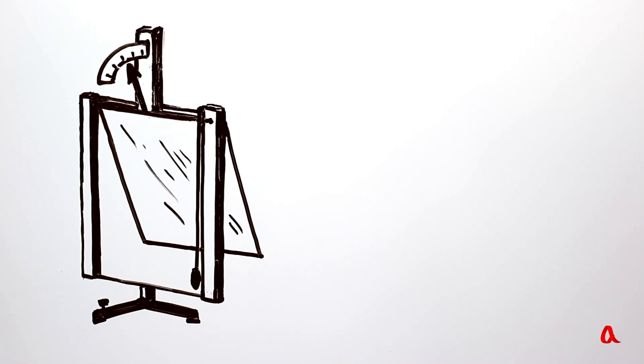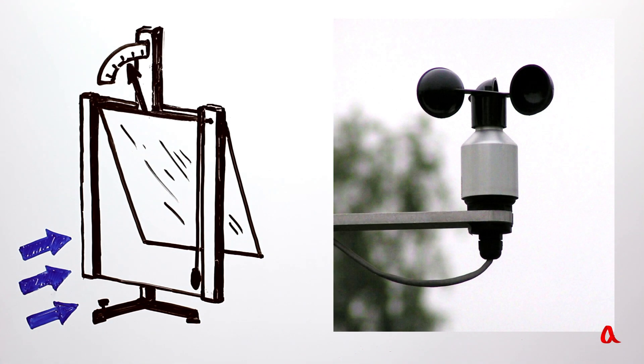The simplest device that can measure the speed of wind is a wind meter board. The stronger the wind blows, the greater its pressure, and the greater the board's deviation from the vertical. Another device used by meteorologists is a cup-type anemometer. The faster the wind blows, the faster the windmill rotates, and the device converts its rotations into wind speed.